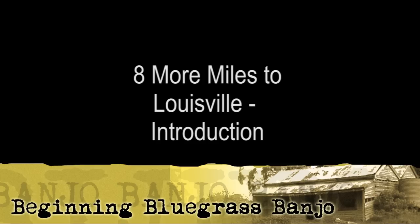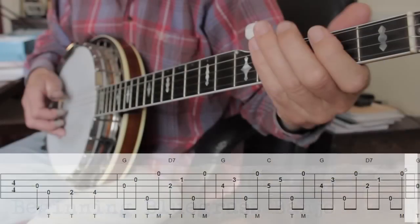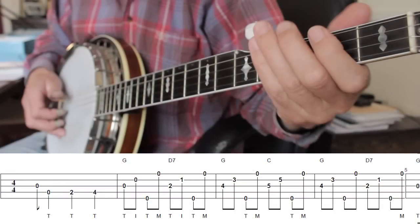In this video we are going to examine parts of the tune 8 more miles to Louisville. This arrangement of the song is played using the alternating thumb roll and very simple chord shapes. Let's look at the first few bars in detail as they are repeated in parts throughout the tune.